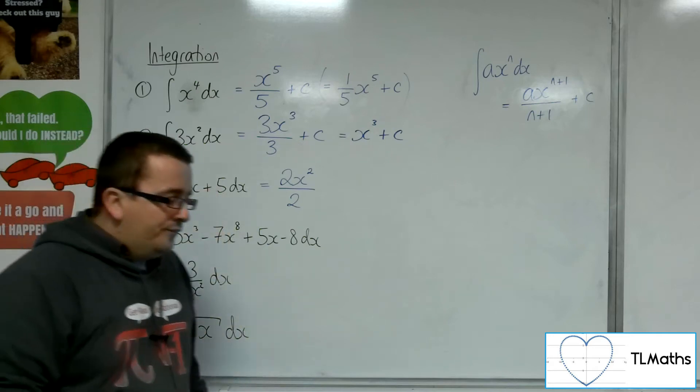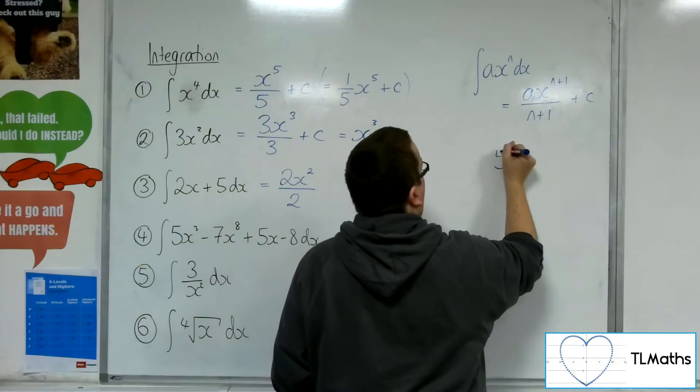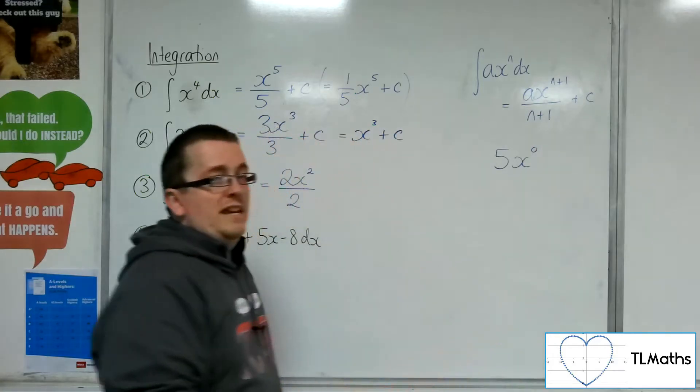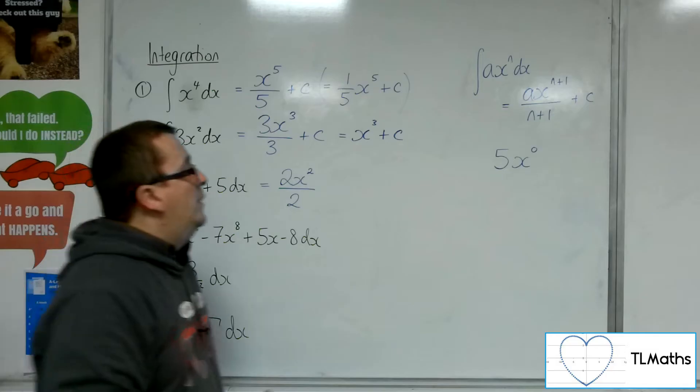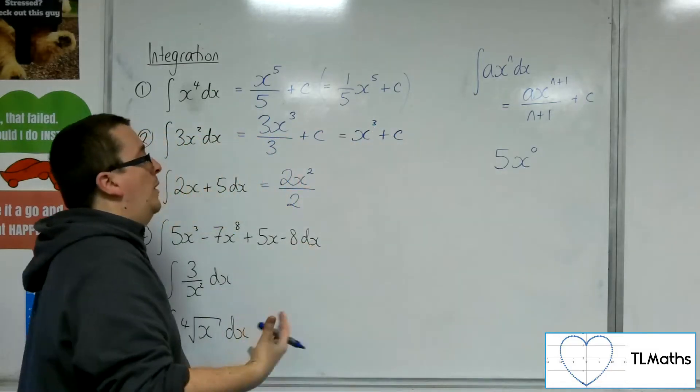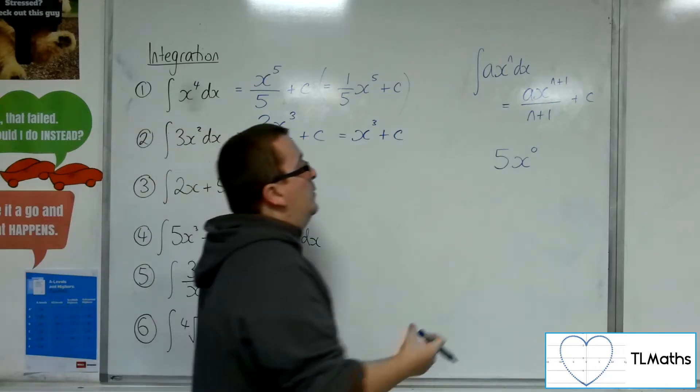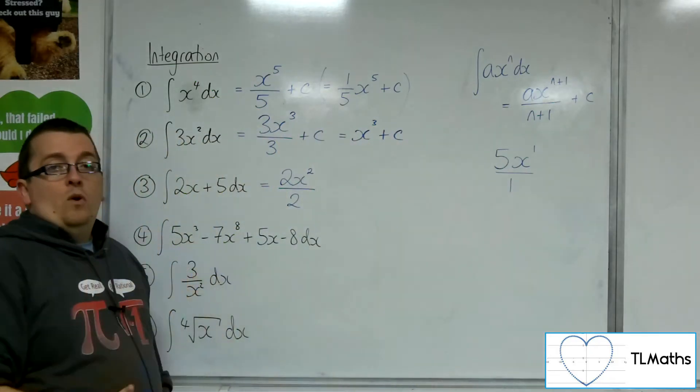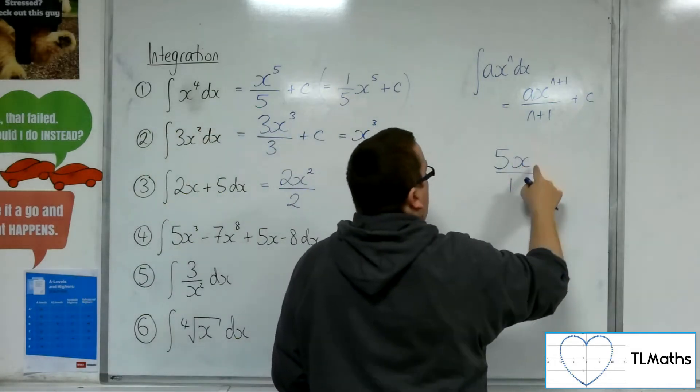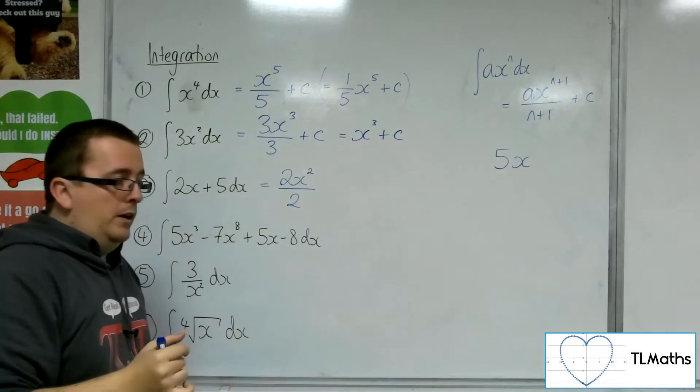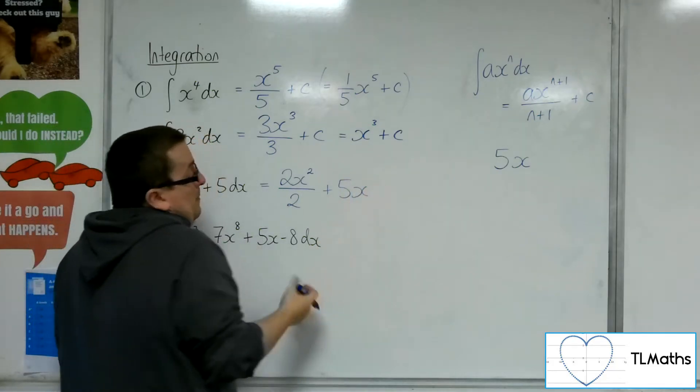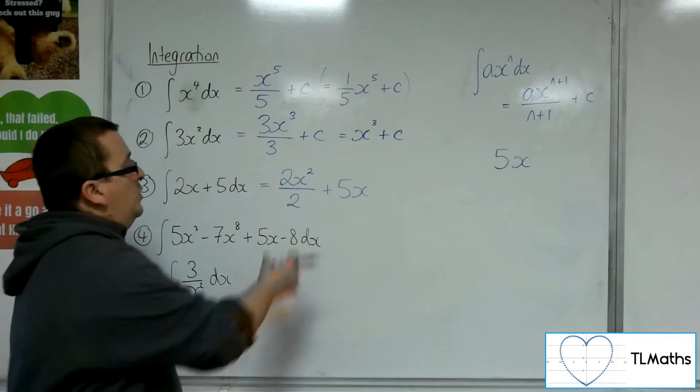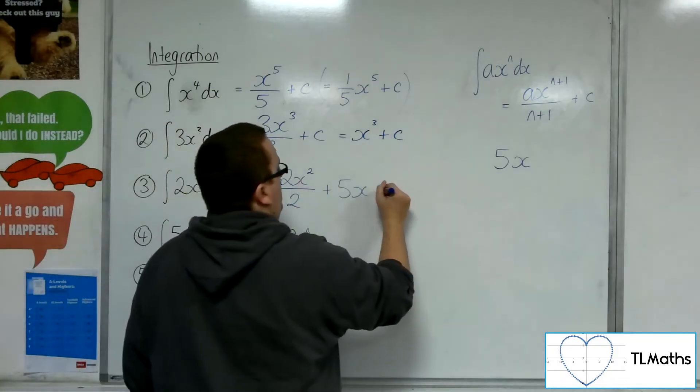Now, as for that 5, any kind of constant term like 5 has, you could think of it as being the coefficient of x to the 0. We know that x to the 0 is just 1, so this is the same as 5. So, when I add 1 to the power and divide by the new power, I would get 5x to the 1 over 1. Now, obviously, dividing by 1 is not going to make any difference, and we don't write x to the 1, and so it would just be 5x. So, we would have plus 5x here, and that comes also from the fact that we know that 5x differentiates to 5. So, it's got to work backwards as well. And then we've got that plus c constant of integration.